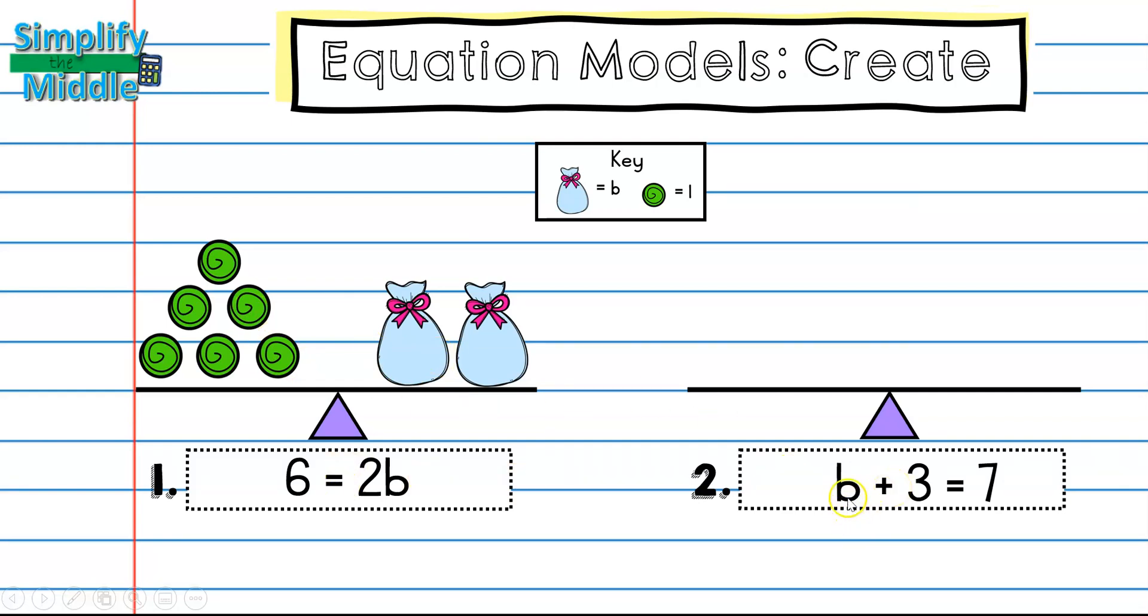Here I have a bag plus 3 candies equals 7 candies. So on this side of the scale, I'll draw my bag and my 3 candies. And on this side of the scale, I draw my 7 candies.